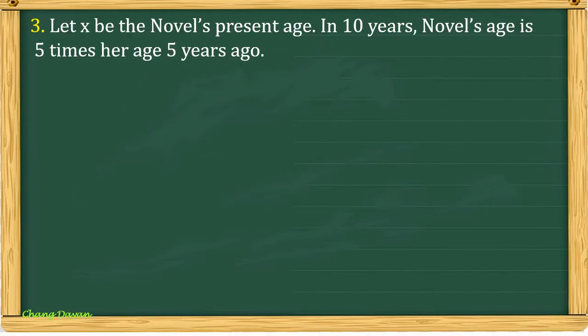Number three, let x be the novel's present age. In 10 years, novel's age is 5 times her age 5 years ago. So we represent here x as novel's present age.